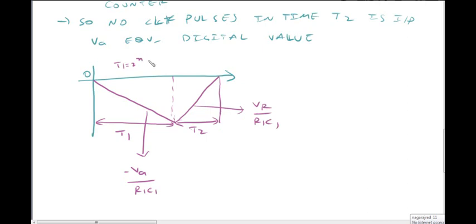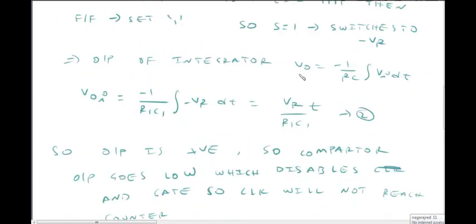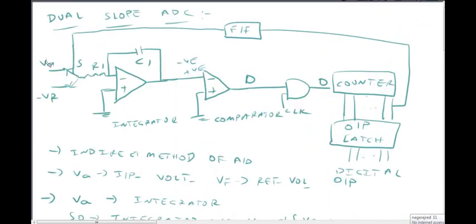T1 is equal to 2^N times T — this is fixed for N cycles. T2 corresponds to a number of clock pulses which gives the digital equivalent of the input voltage. At the beginning, 2^N clock pulses are counted. When all-ones are reached, the switch is connected to minus VR. During T2, the integrator ramps positive back to zero.